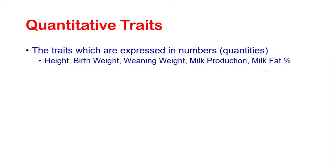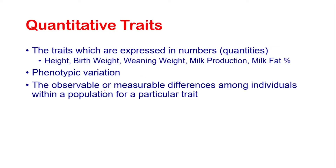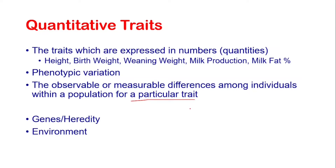What are the causes of variation in quantitative traits? Before going towards our today's topic, I would like to define phenotypic variation. Phenotypic variation can be defined as the observable or measurable differences among individuals within a population for a particular trait. For example, the differences in birth weight among the individuals of a population would be the phenotypic variation. The variation in quantitative traits arises due to two major factors.